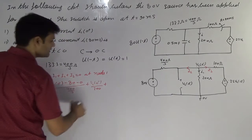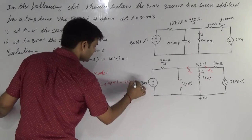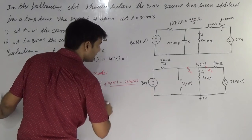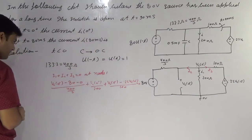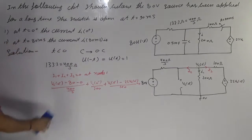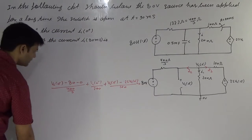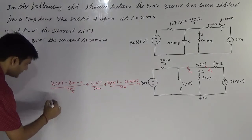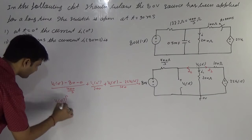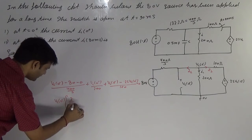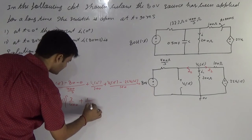I3 is [VC(0 minus) minus 2.5 VC(0 minus)] divided by 100, this will equal to zero. Now solve it: VC(0 minus) — 300 upon 400 plus 1 upon 200.